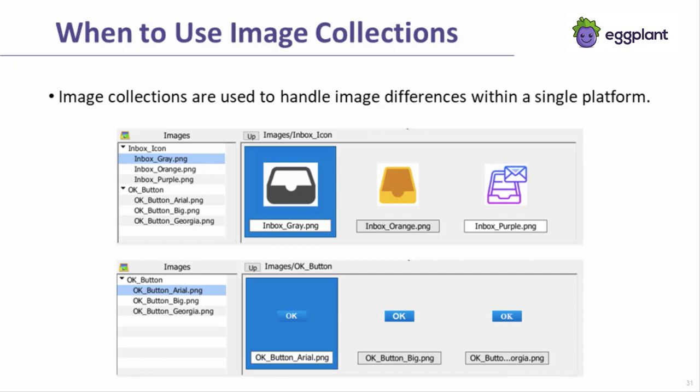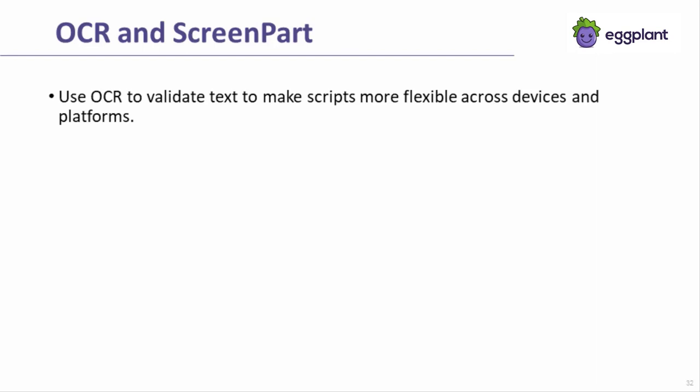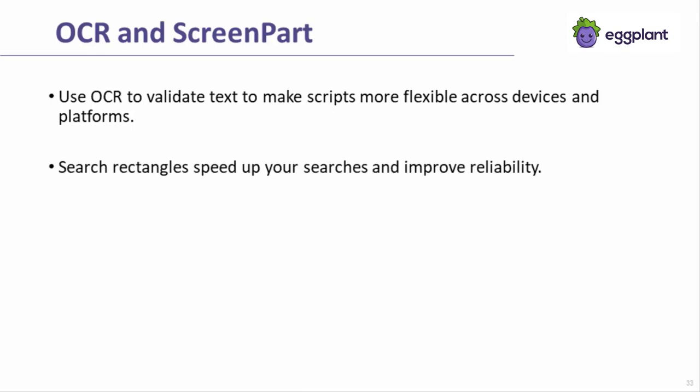OCR is extremely powerful when automating across a variety of devices and platforms because it is not sensitive to the typeface, font size, and colors that might vary for text across different sets. Leaning heavily on OCR for text elements means that fewer images will be needed, which will decrease script creation and maintenance time. However, OCR tends to need a bit more help up front when you are first writing your scripts. Search rectangles limit the search area of the screen, which can vastly improve the speed and reliability of OCR searches.